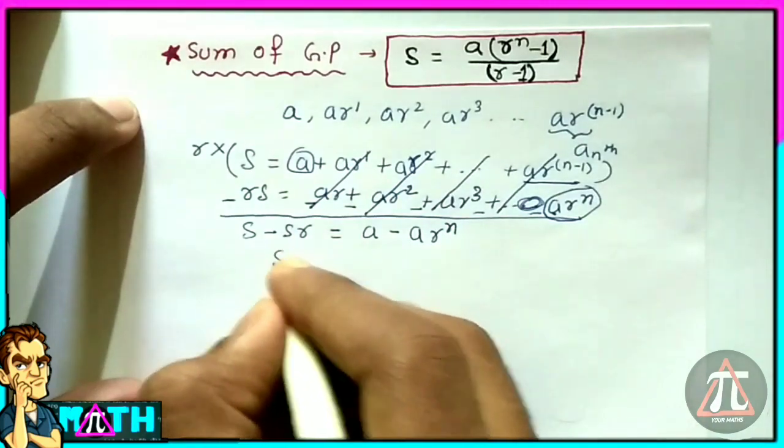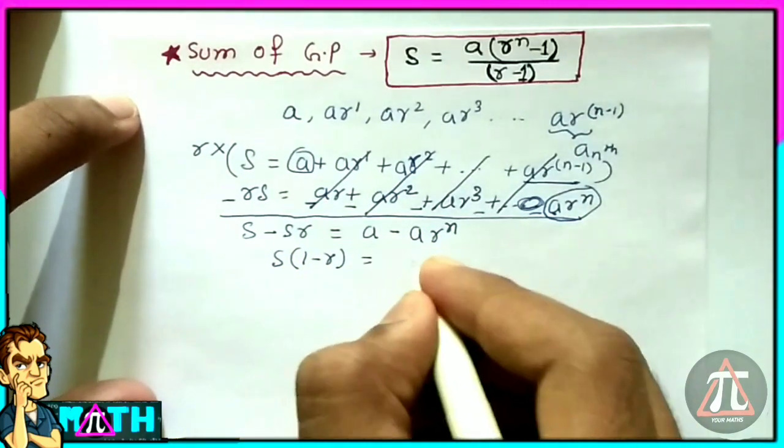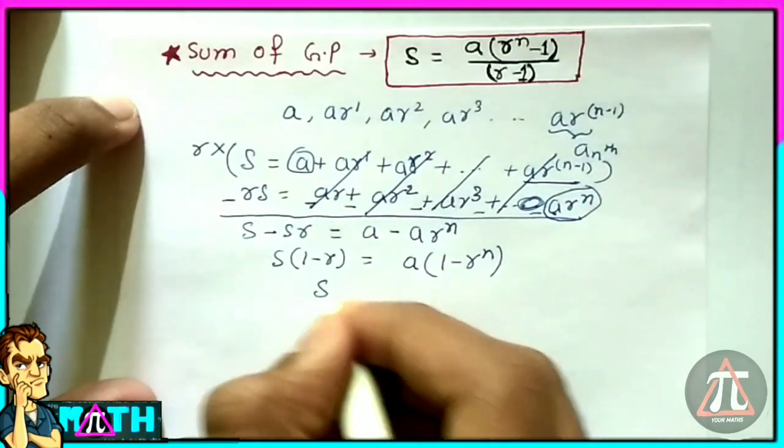...a minus ar to the power n. Take common S from the left-hand side and a from the right-hand side and solve it out.